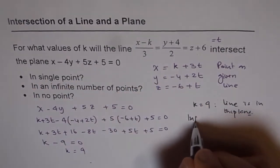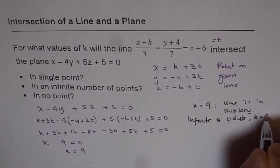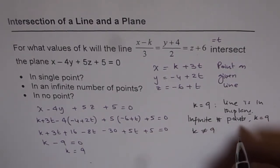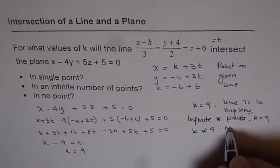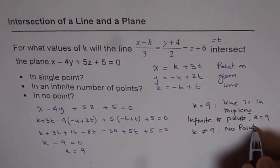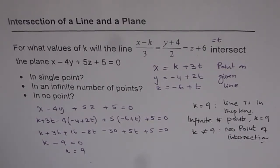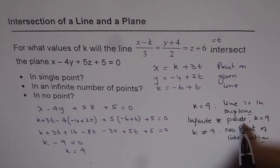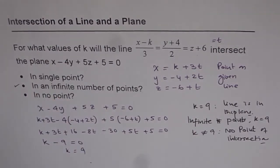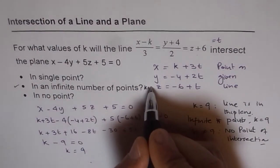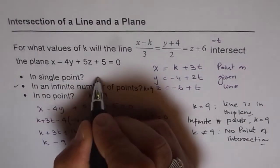If k is not equal to 9, the line will be parallel to the plane and we will get no points of intersection. So we have two conditions: either the line is contained in the plane (infinite points, k equals 9) or no point of intersection if k is not equal to 9. A single point intersection is not possible.